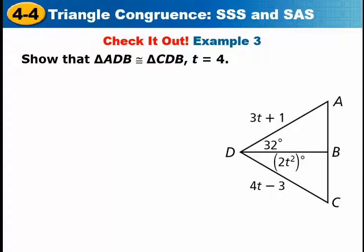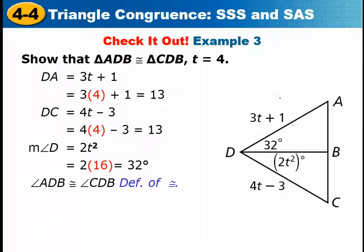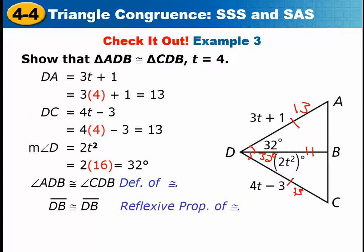Here's another example of the same kind of thing — plug t = 4 in wherever T appears. DA ends up being 13, DC also ends up being 13, so those two sides are congruent. The angle 2t² ends up being 32 degrees, so those angles are congruent. And DB is congruent to DB by the reflexive property. By side-angle-side, the two triangles are congruent.